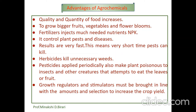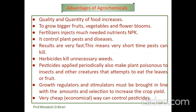Pesticides applied periodically make plants poisonous to insects and other creatures that attempt to eat the leaves or fruits. Growth regulators and stimulators increase the crop yield. Agrochemicals control plant pests and diseases and are effective substances to eliminate insects that can cause diseases such as malaria and dengue fever. Pesticides are very effective — nearly all target pests which come in contact with them will be killed. Economically, agrochemicals also play an important role.